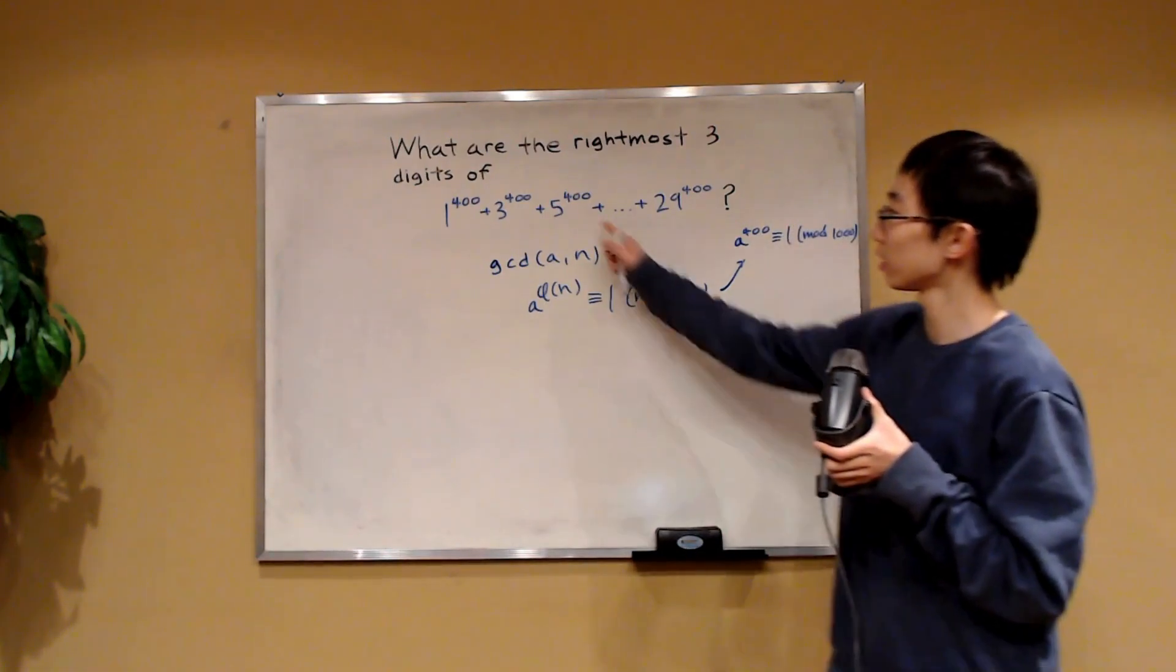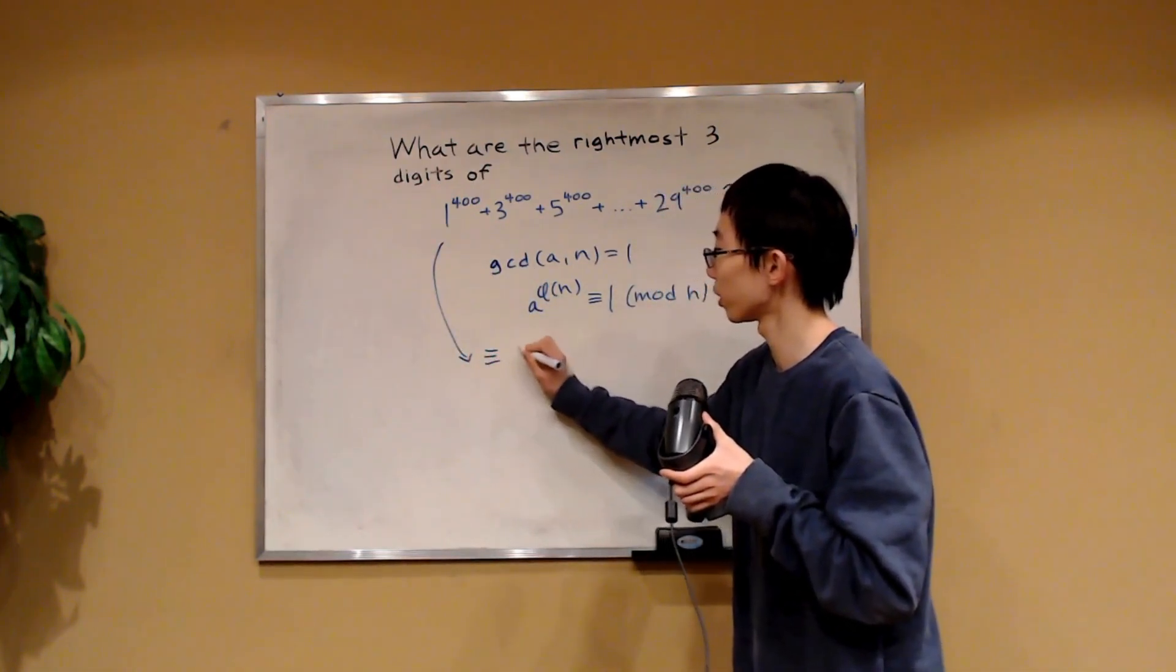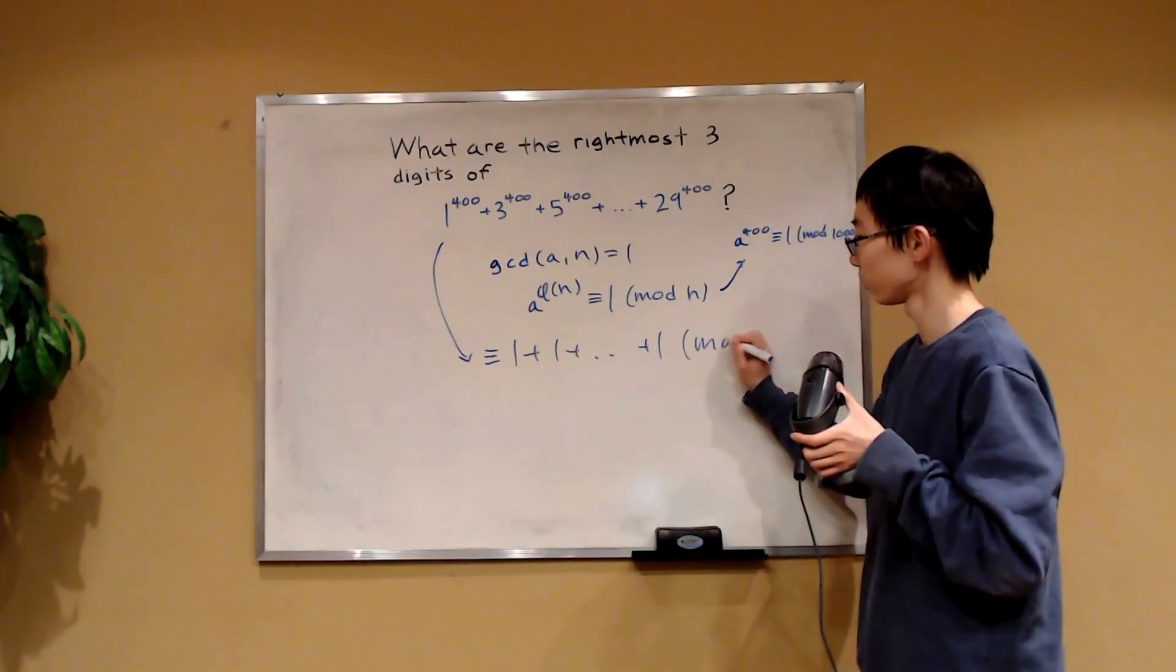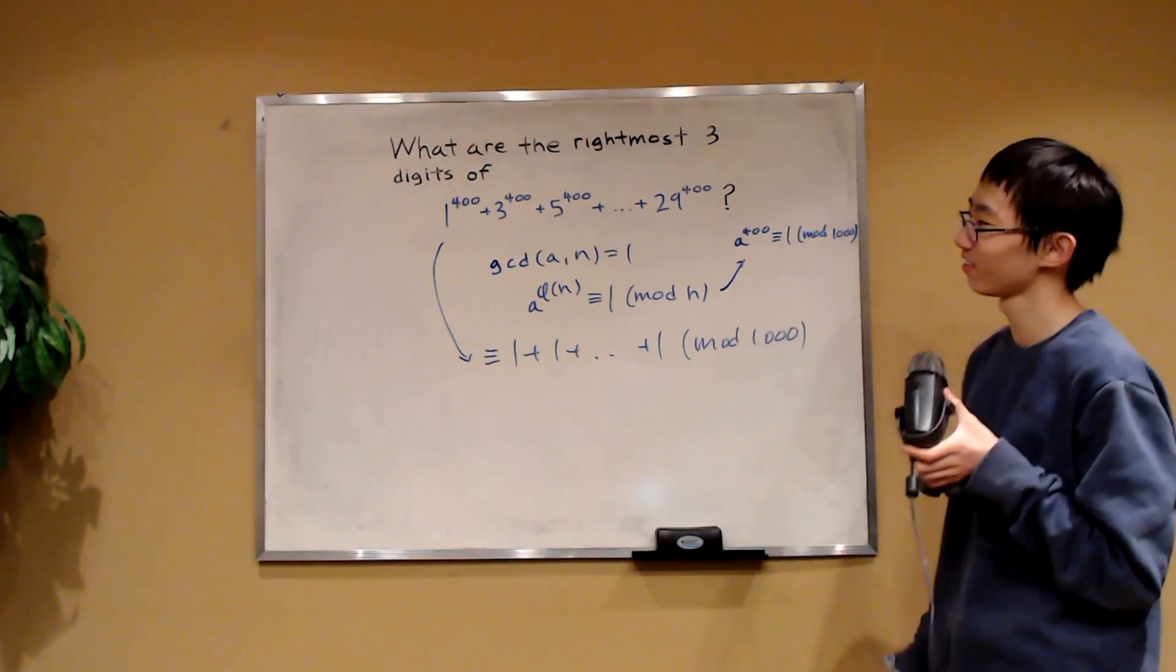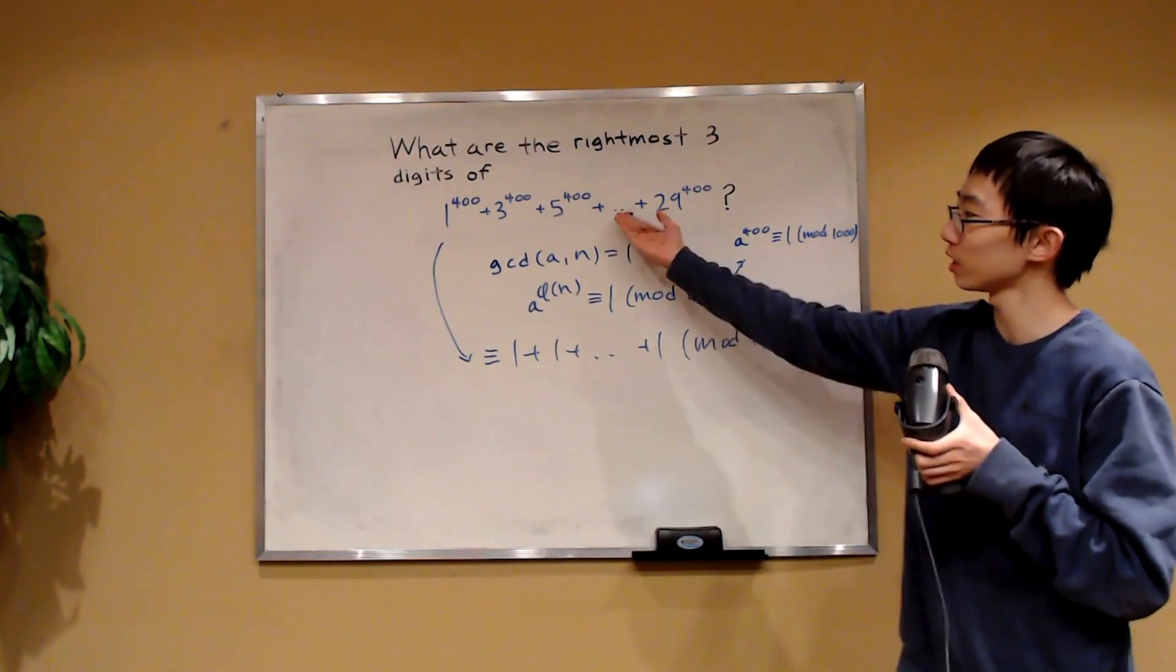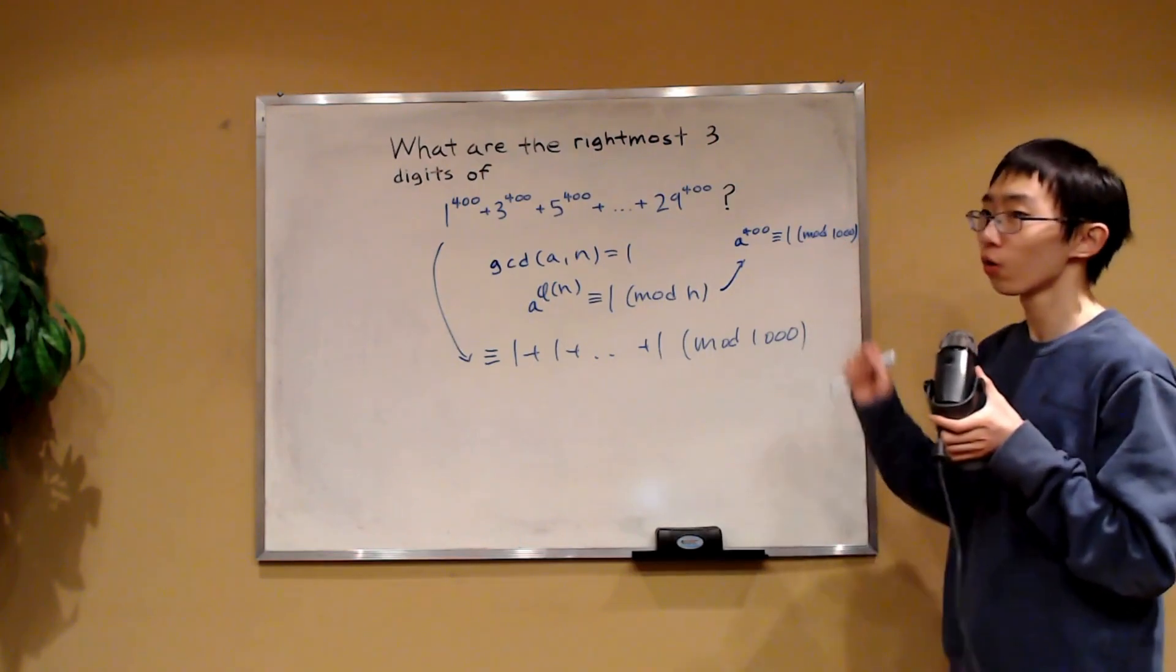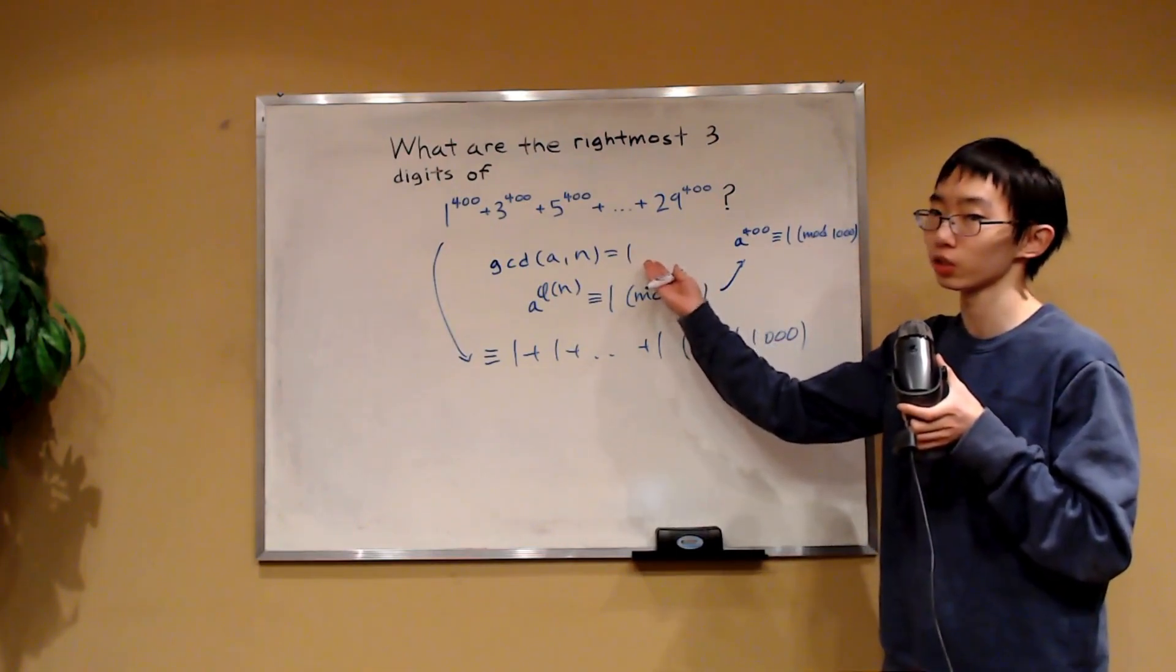Because of Euler's theorem we've discovered an insight for this problem. So does this mean that this entire number is just congruent to a bunch of 1's added together? No. Because there are some numbers in here which are not relatively prime to 1,000. Remember, Euler's theorem only works when the a and n are both relatively prime to each other.